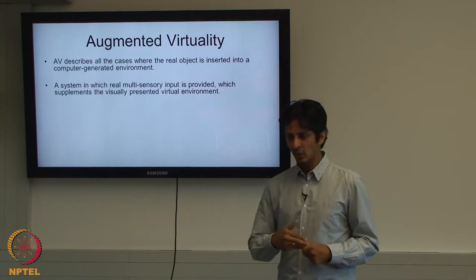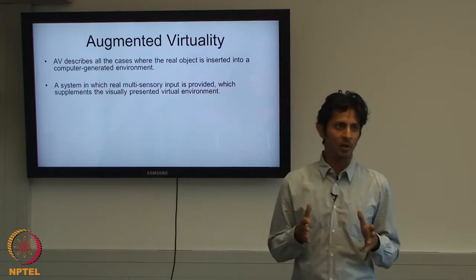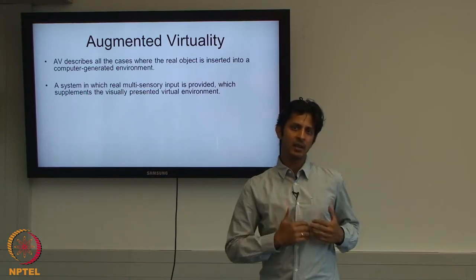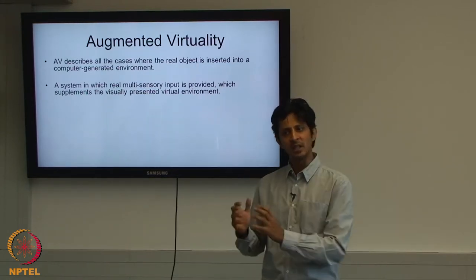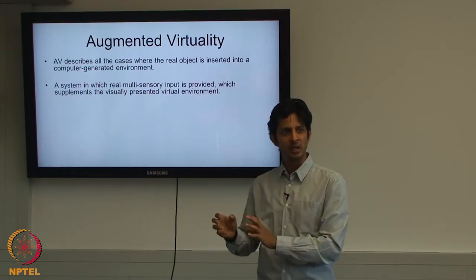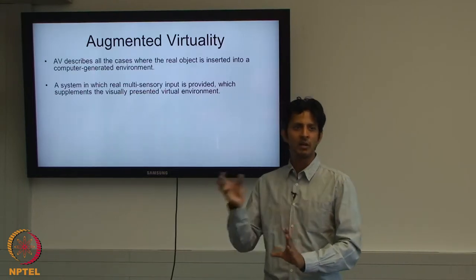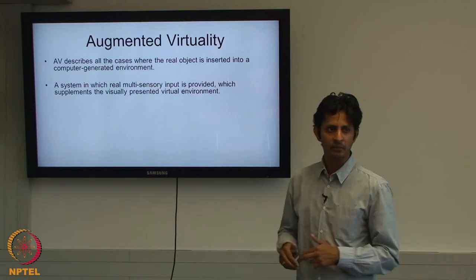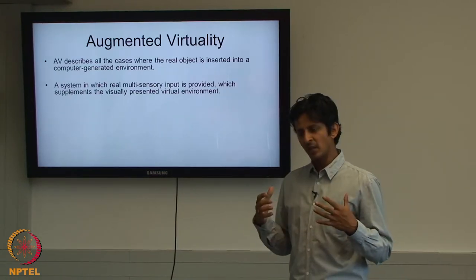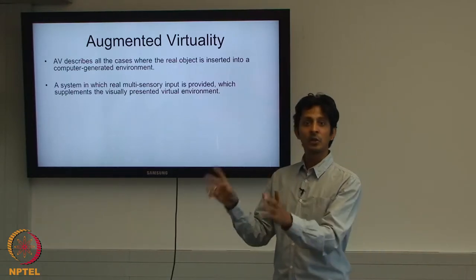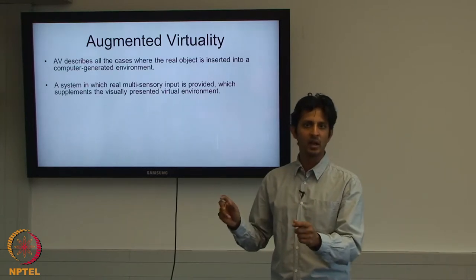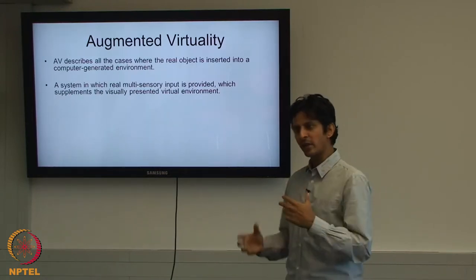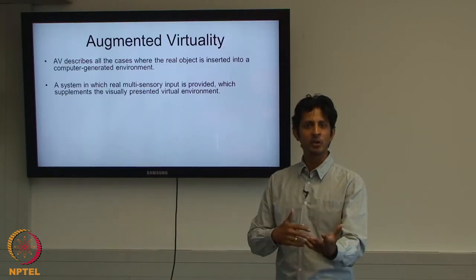Augmented virtuality is the in-between step that people don't talk about normally. In virtual reality you immerse yourself in a virtual environment; in augmented reality you immerse virtual objects in a real environment; and augmented virtuality is where you immerse real objects in a virtual environment. Think of it as a truth table: virtual-virtual is VR, virtual-real is augmented virtuality, real-virtual is AR, and real-real is reality. An example: a virtual screen in a virtual room playing real content.